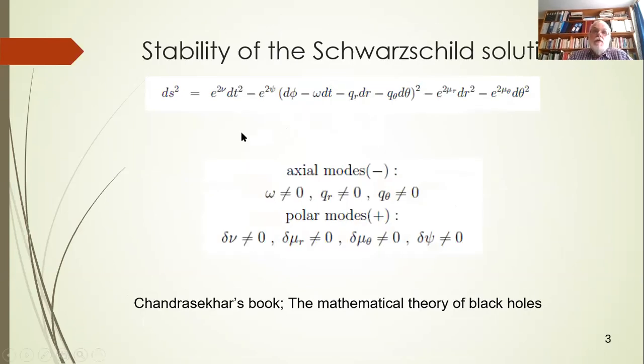The problem is considering the stability, investigating the stability of the Schwarzschild solution, as was done in the book by Chandrasekhar, The Mathematical Theory of Black Holes. We use his path completely. So he starts with a length square element, which is given here, and the external modes are given when omega, qr, qtheta not equal to 0. We only will discuss external modes and not the polar modes.